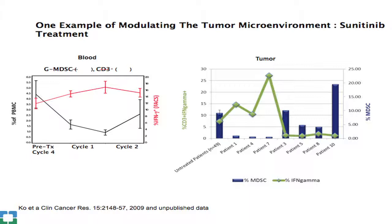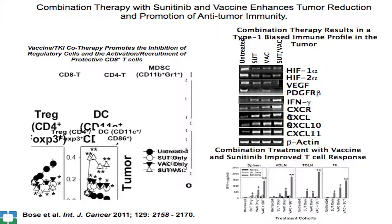We have shown that in kidney cancer patients treated with sunitinib, there is a reduction in MDSC numbers over time with a corresponding increase in Th1 response and gamma interferon. In the tumor, results are more mixed — some patients had very low MDSC levels and good T cell gamma interferon responses, while others retained MDSCs and had no T cell response. This suggests myeloid cells are involved in resistance to TKIs.